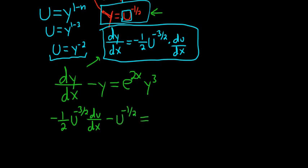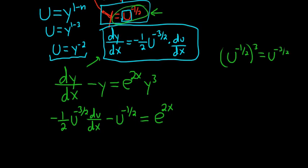On the right-hand side we have e^(2x) times y cubed. Since y equals u to the negative one-half, y cubed is u to the negative one-half, cubed, which is u to the negative three-halves. So the right side becomes e^(2x) · u to the negative three-halves. This should now be a linear differential equation, so we want to write it in standard form.